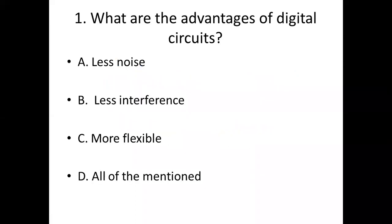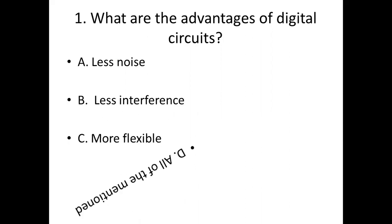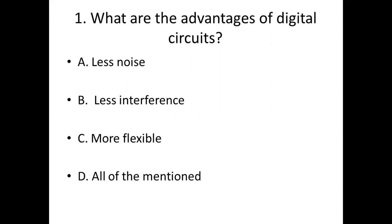Question 1: What are the advantages of digital circuits? Option A: less noise. Option B: less interference. Option C: more flexible. Option D: all of the mentioned. Answer: Option D — all of the mentioned.